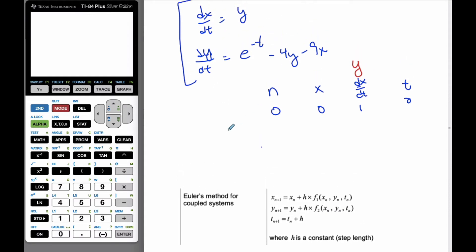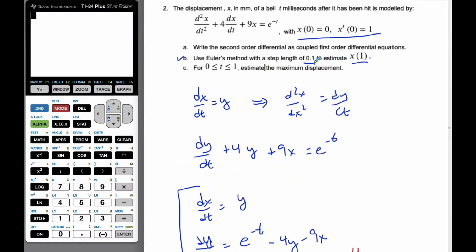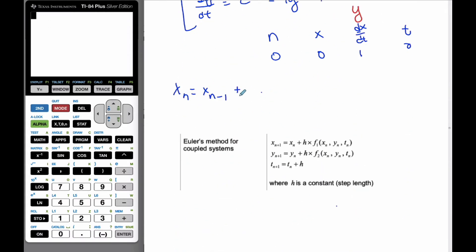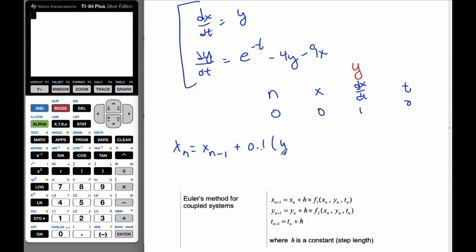And I know my x value is going to be, so I always go 1 less, so xn is equal to xn minus 1 plus h, which is my step, which I am told is 0.1. So 0.1 times the derivative of this, which is going to be yn minus 1.